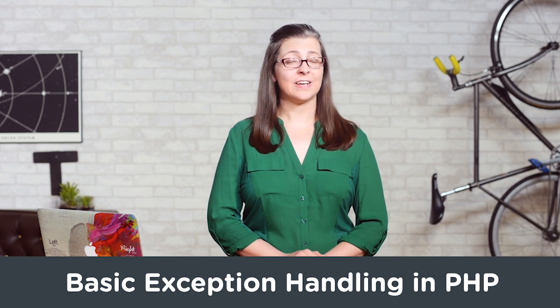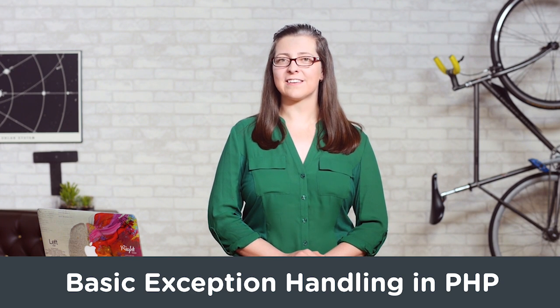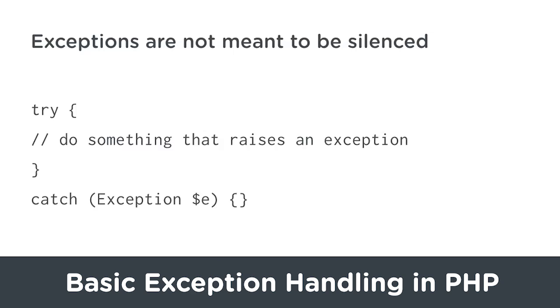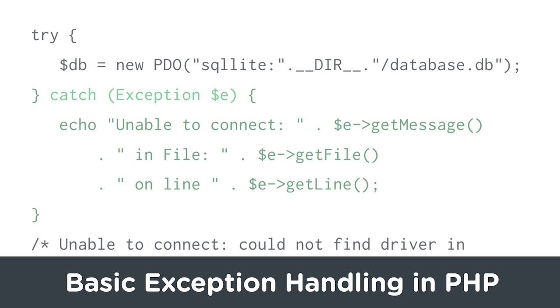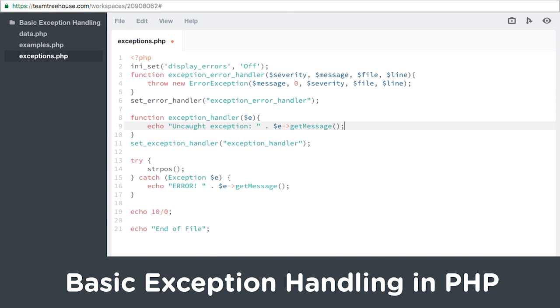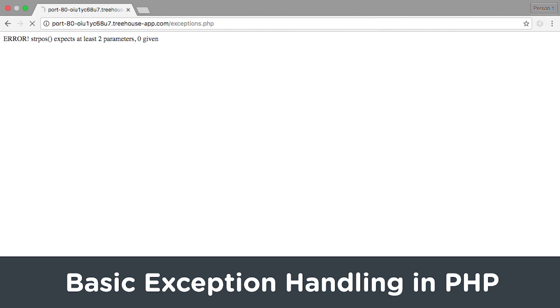An exception is an object that is thrown by your application in the event that something goes wrong. Learn about exceptions, the object-oriented approach to handling errors, and basic exception handling with PHP.